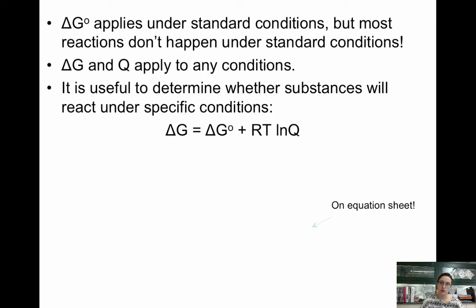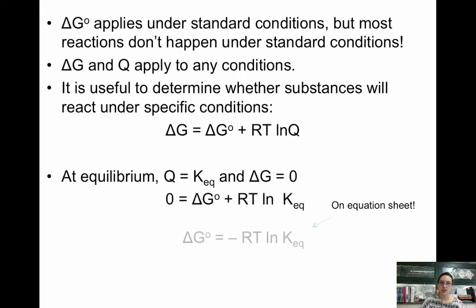At equilibrium, Q equals K, and at equilibrium delta G equals 0. So if we rearrange everything, delta G not equals negative RT times ln of K. This is on your equation sheet. This allows you to go between free energy and the equilibrium constant.